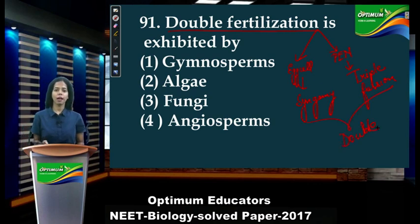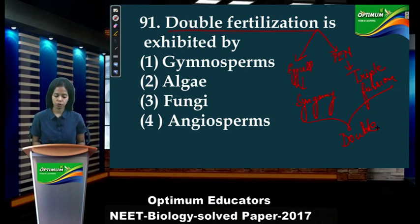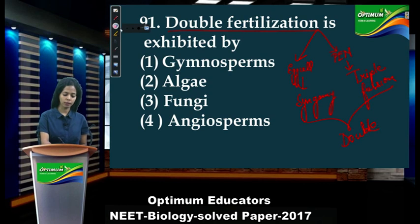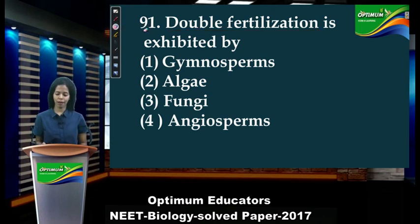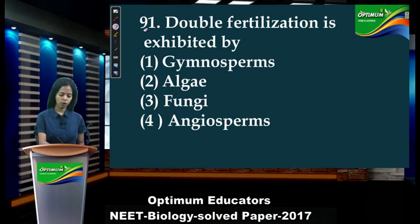So which plant exhibits double fertilization? You all know it's a peculiar feature of angiosperms. Gymnosperm, algae, bacteria, and fungi don't show such a feature. The correct option is option 4.